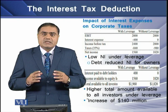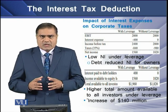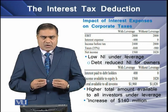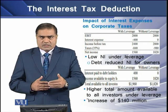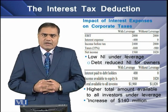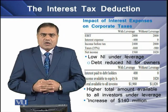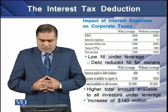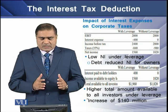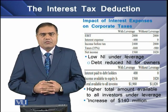For the unlevered firm, interest paid to debt holders is $0. For equity holders, the remaining amount after taxes is $1,560 million under the leveraged policy and $1,820 million under the unleveraged policy. So the total amount available for all capital providers under the leveraged policy is $1,960 million, whereas under the unleveraged policy it is $1,820 million.